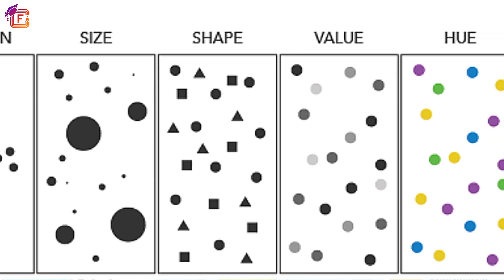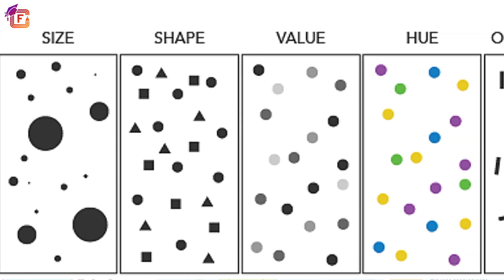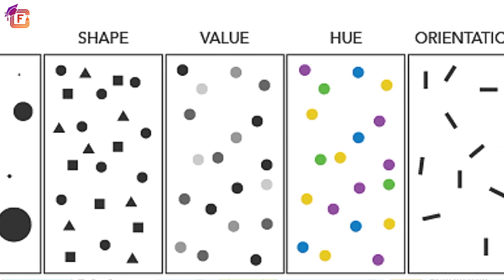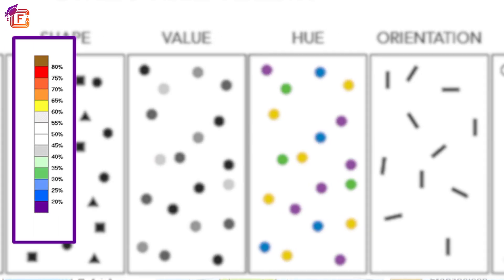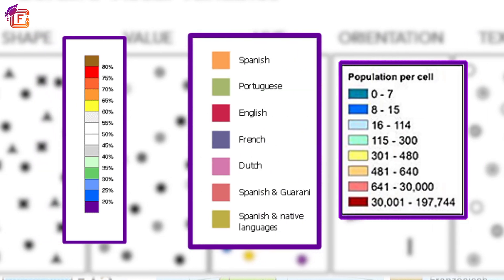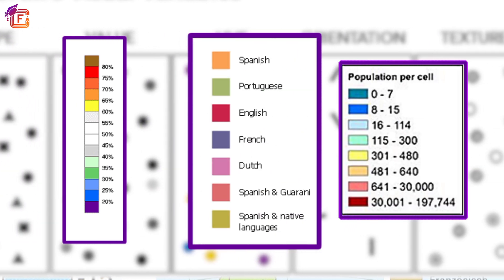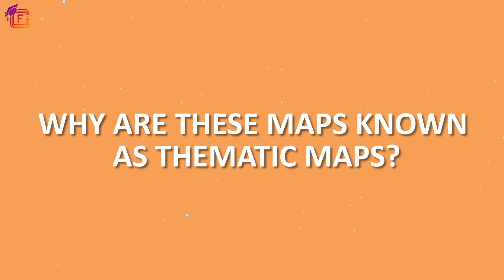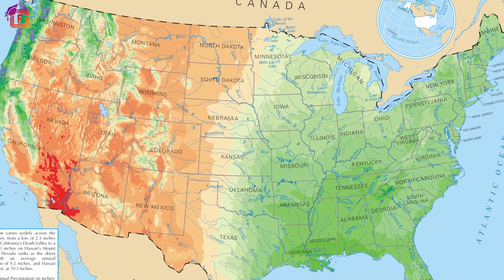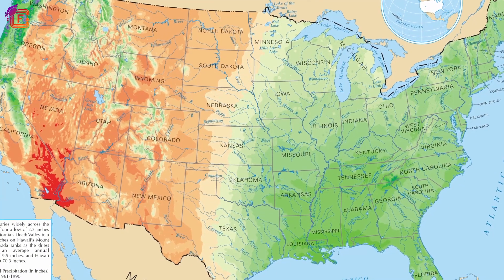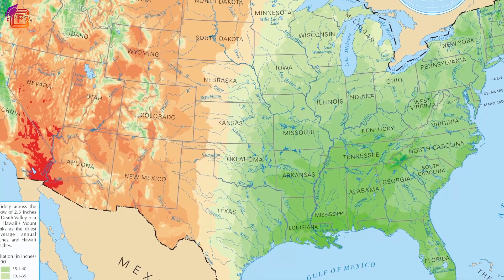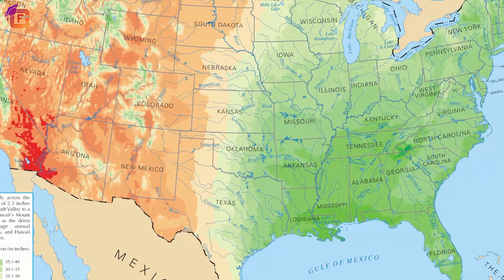Thematic maps usually involve the use of map symbols to visualize selected properties of geographic features that are not naturally visible, like temperature, language or population. These maps are known as thematic maps because they represent features related to a particular theme or aspect of geography.